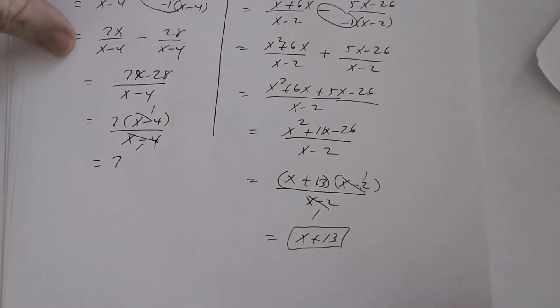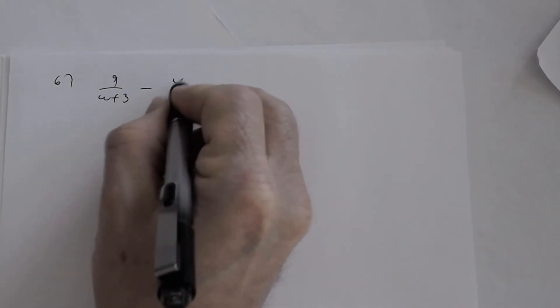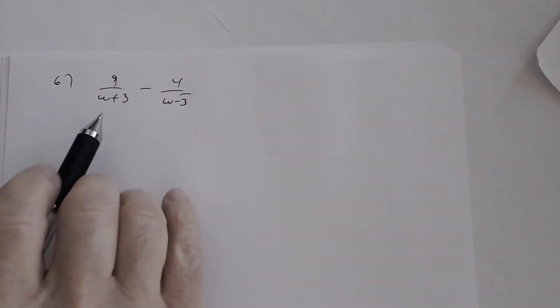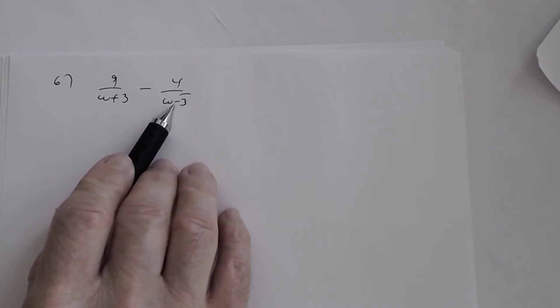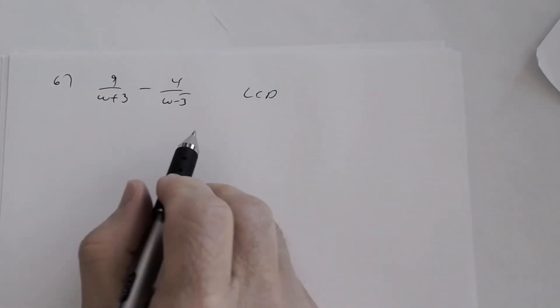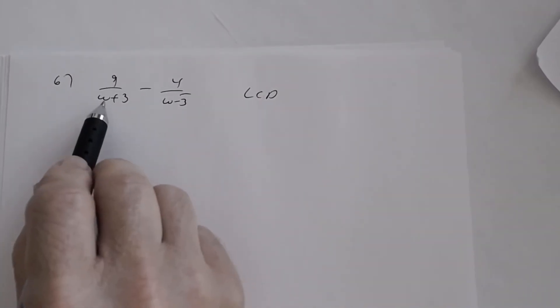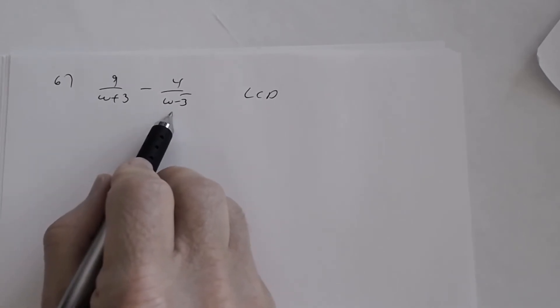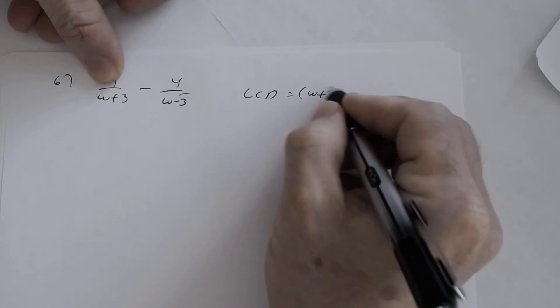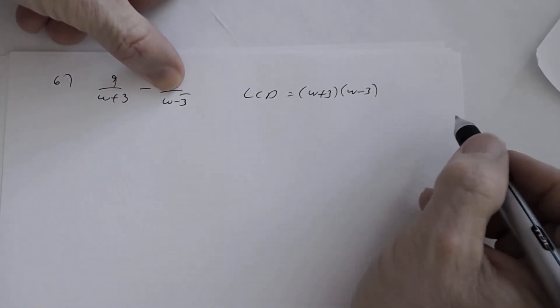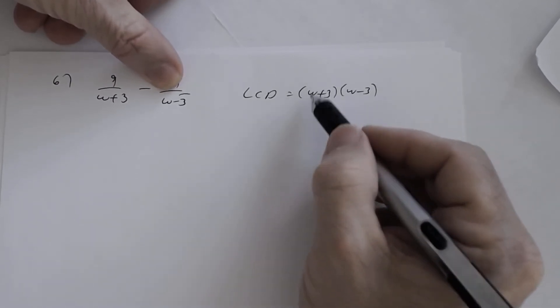Number six has denominators that are different — w plus 3 and w minus 3 are not exactly the same and they are not opposites. So you have to find the least common denominator. To find the LCD, you must factor all your denominators. W plus 3 can't be factored further, and w minus 3 can't be factored further. The LCD must include every factor you see in all your denominators.